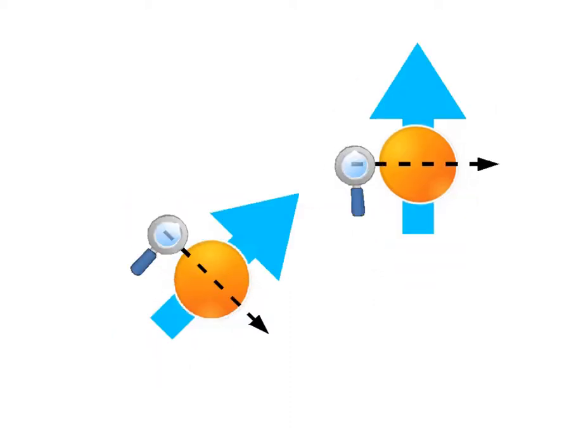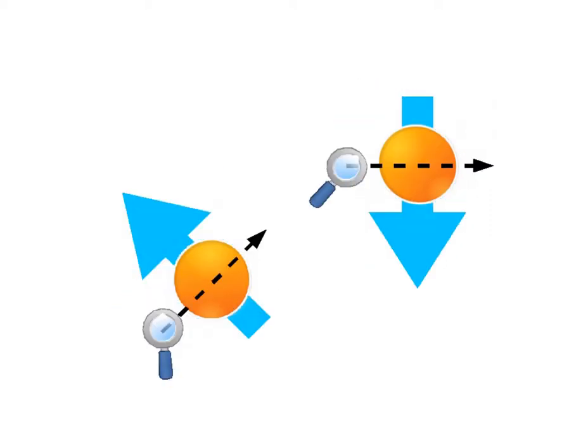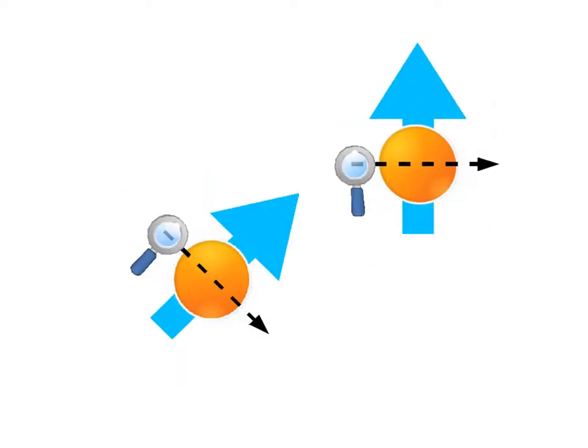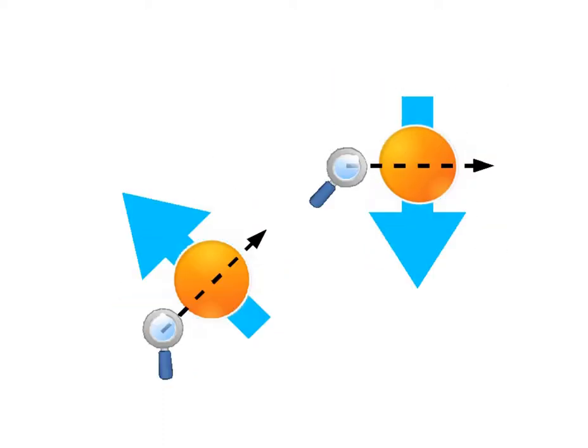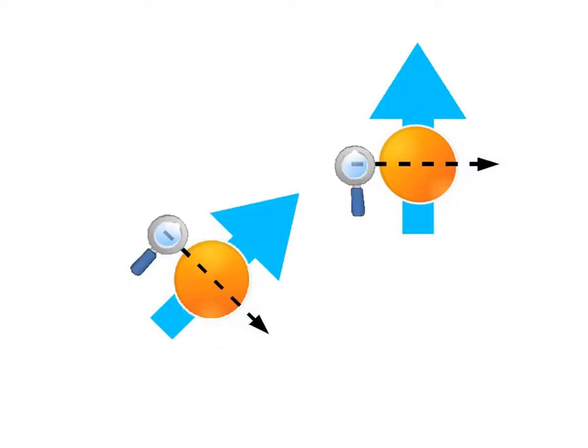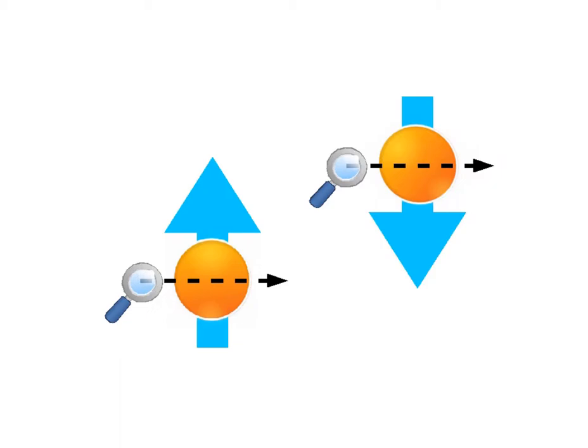Many variations of this basic test have proven that spin is indefinite until observed. They also prove that observing the spin of one electron instantly causes the spin of both electrons to become definite. The entangled electrons appear to communicate with each other at faster than light speeds.